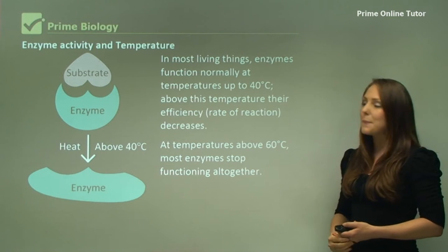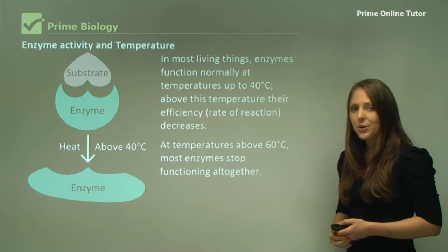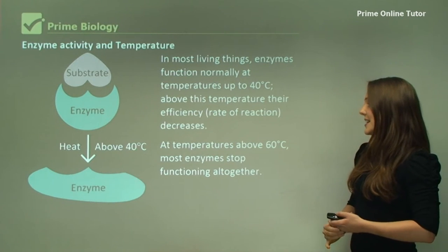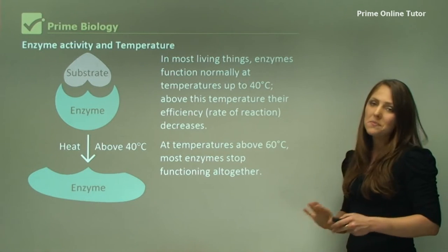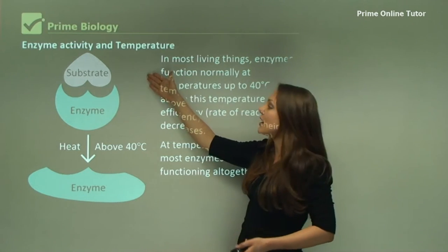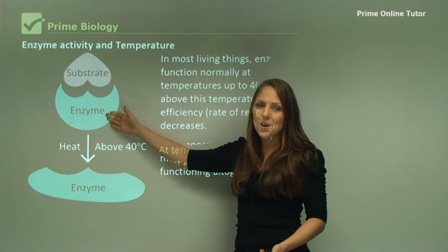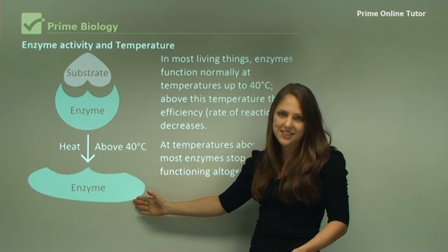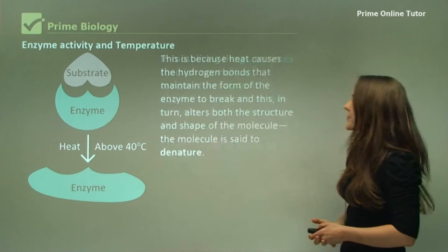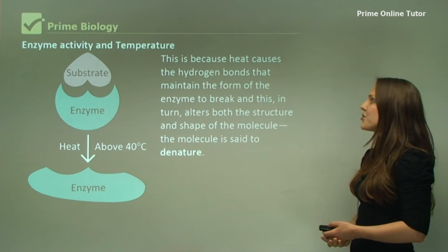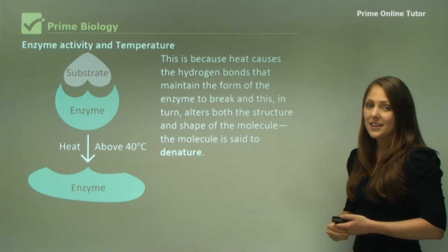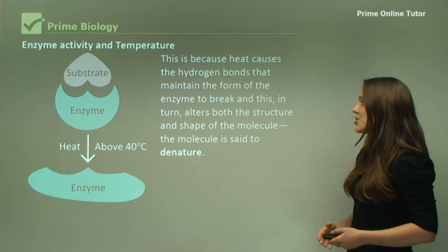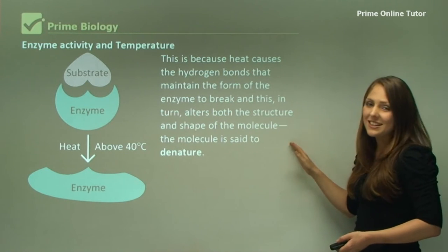In most living things enzymes function normally at temperatures up to about 40 degrees Celsius. Above this temperature their efficiency does decrease. At temperatures above 60 degrees most enzymes stop functioning altogether. You can see in this diagram we have a substrate that fits an enzyme perfectly. When there's heat above 40 degrees Celsius the enzyme starts to denature or change shape. This is because heat causes the hydrogen bonds that maintain the form of the enzyme to break. And this in turn alters both the structure and the shape of the molecule. The molecule is said to denature.